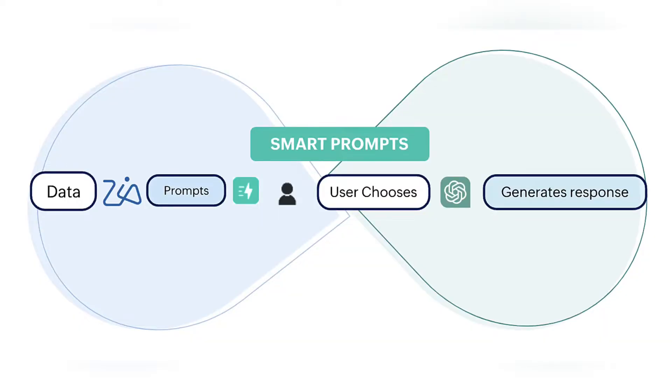ChatGPT has a lot of different integrations with many Zoho apps — it has an integration with Zoho Writer, Zoho Click, and also other apps. To highlight what you can do with the integration of ChatGPT with different Zoho apps: starting off with Zoho CRM, where Zia is also powered by OpenAI and has a feature of smart prompts.